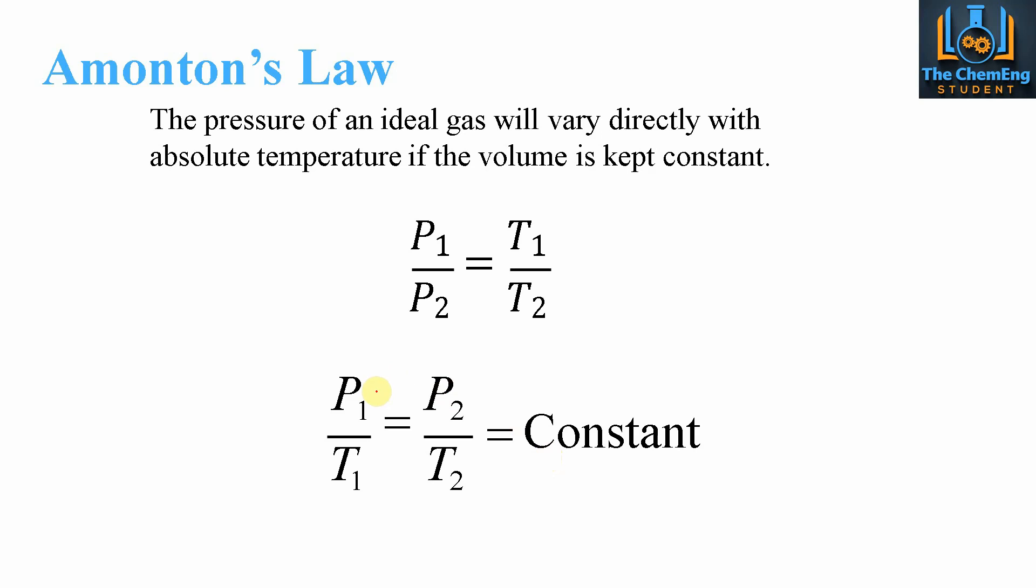And then we have Amonton's Law, which is where we fix the specific volume. The pressure of the ideal gas will vary directly with the absolute temperature. We know that the pressure and the temperature has a significant effect on the properties of ideal gases. So here, by fixing the volume, we have the relationship of P1 over P2 equals T1 over T2. Again, grouping the 1s and the 2s, we get P1 over T1 equals P2 over T2. And that again will be equal to some constant. So if we know the conditions at point 1 and the temperature at point 2, we can determine the pressure at point 2.